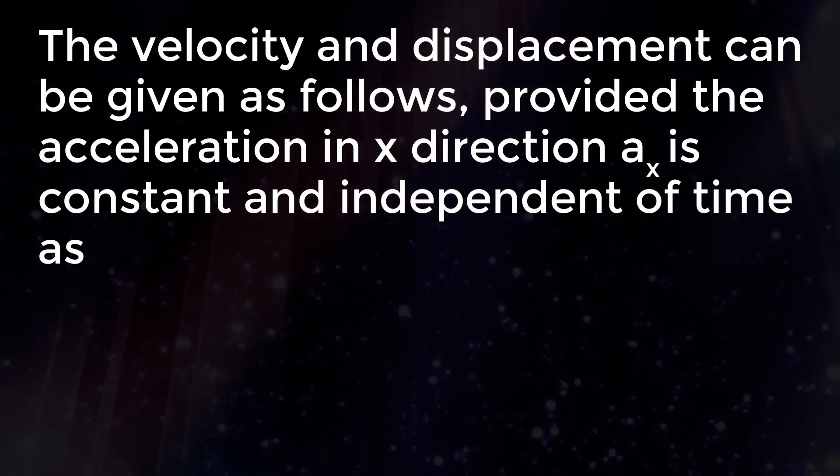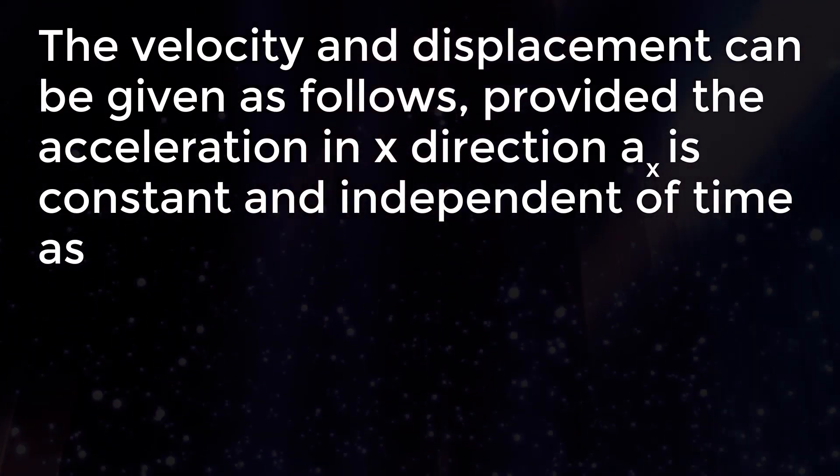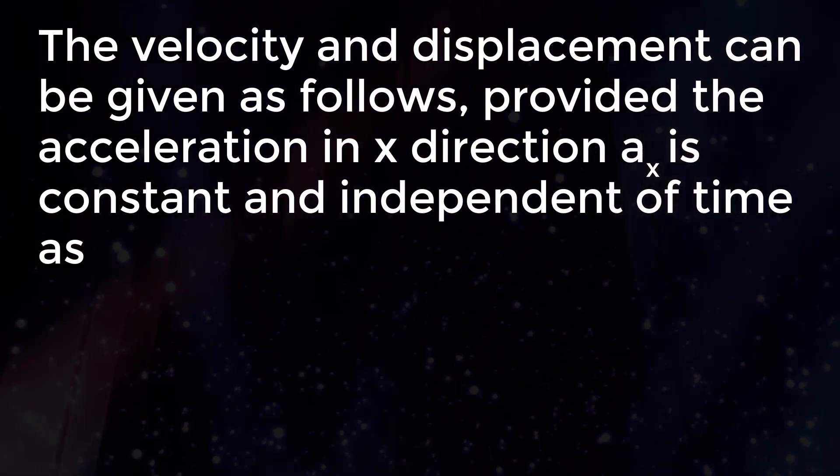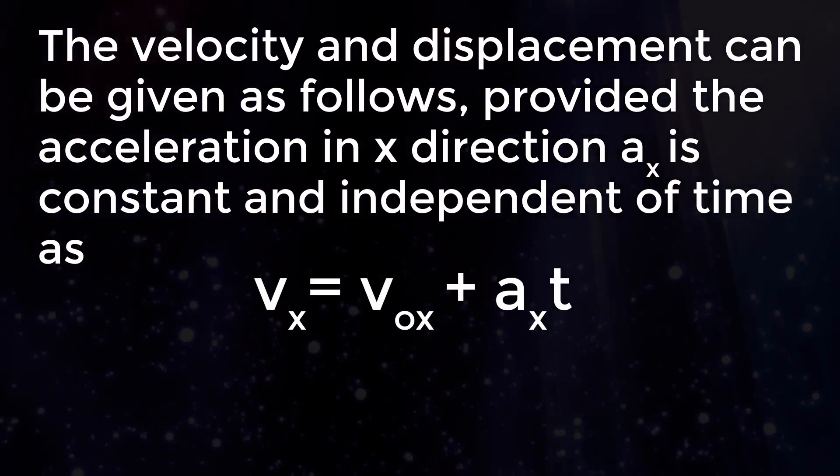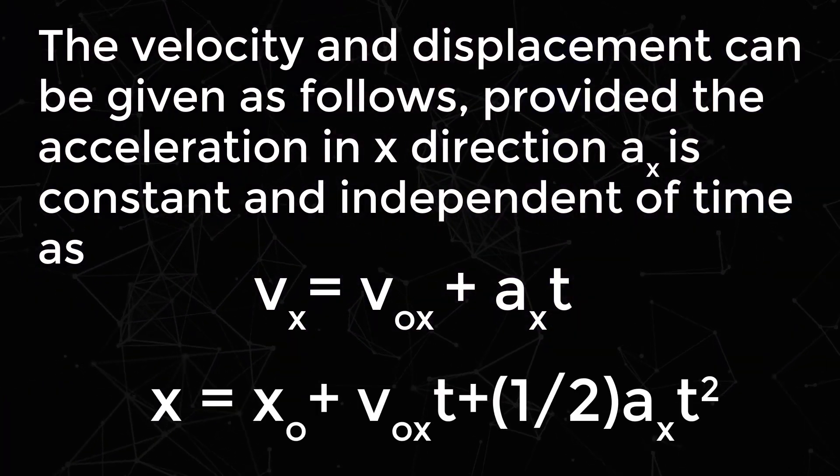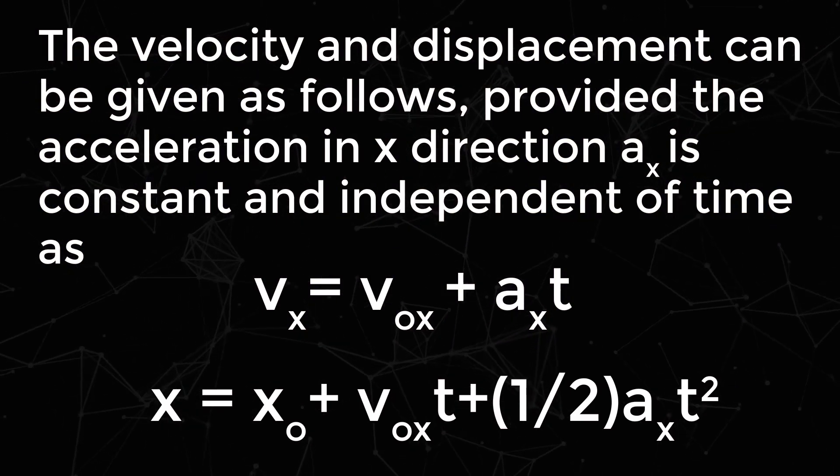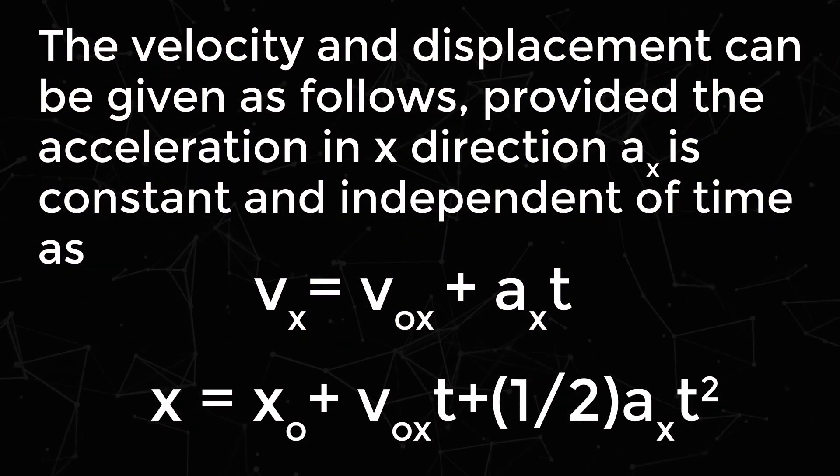The velocity and displacement can be given as follows, provided the acceleration in x direction ax is constant and independent of time: vx equals v0x plus ax times t, and x equals x0 plus v0x times t plus one-half times ax times t squared.